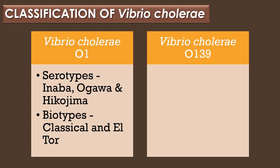Classification of Vibrio cholerae: Vibrio cholerae is categorized into two types. The first type is Vibrio cholerae O1 and the second type is Vibrio cholerae O139. Vibrio cholerae O1 is further categorized into three serotypes and two biotypes. The three serotypes are Inaba, Ogawa, and Hikojima, and the two biotypes are classical biotype and El Tor biotype.